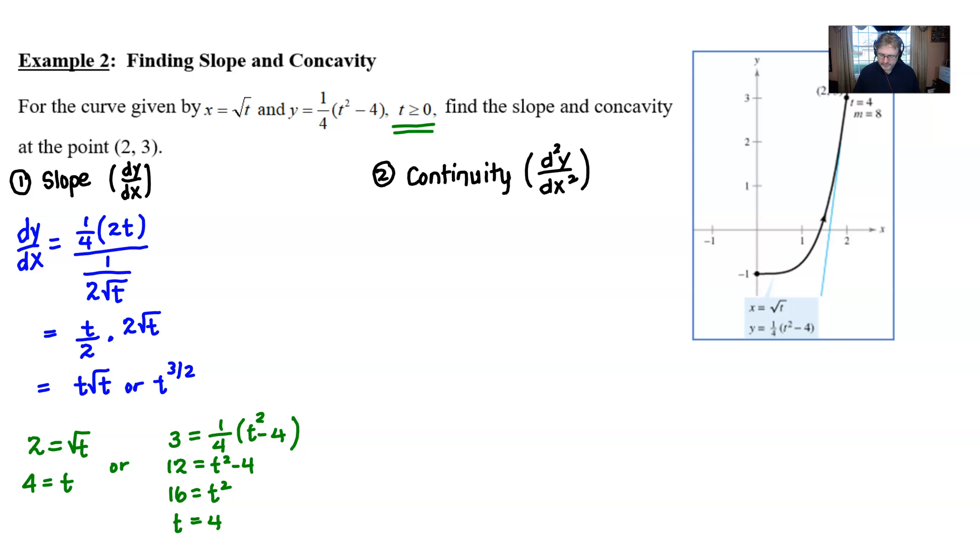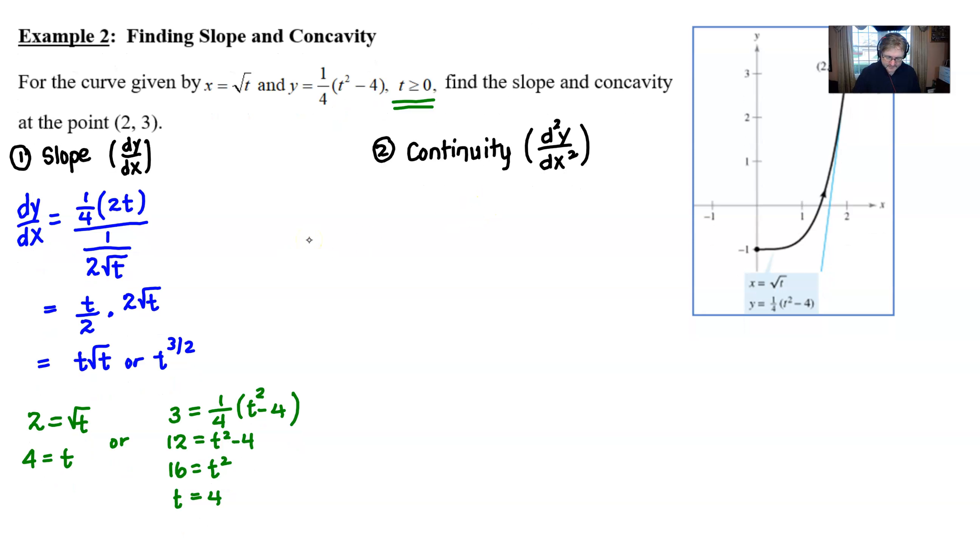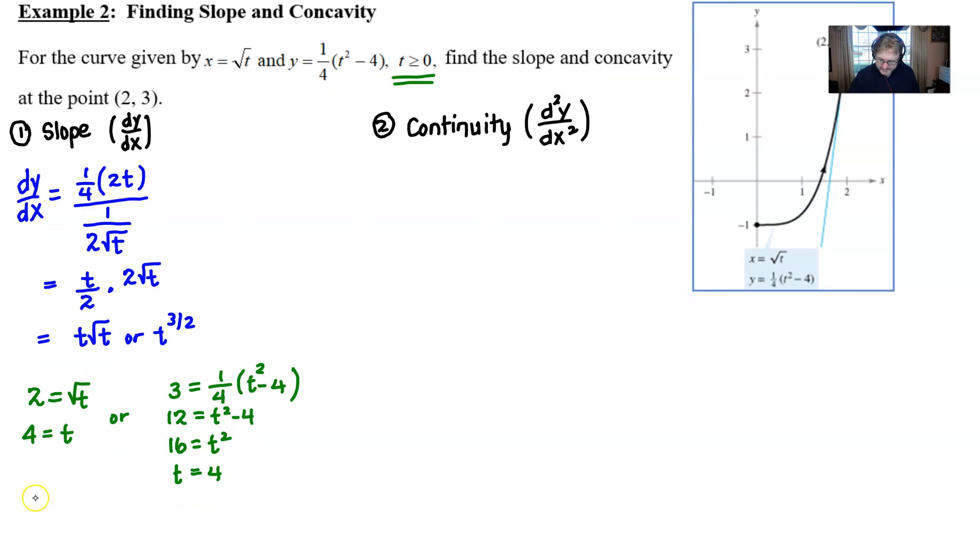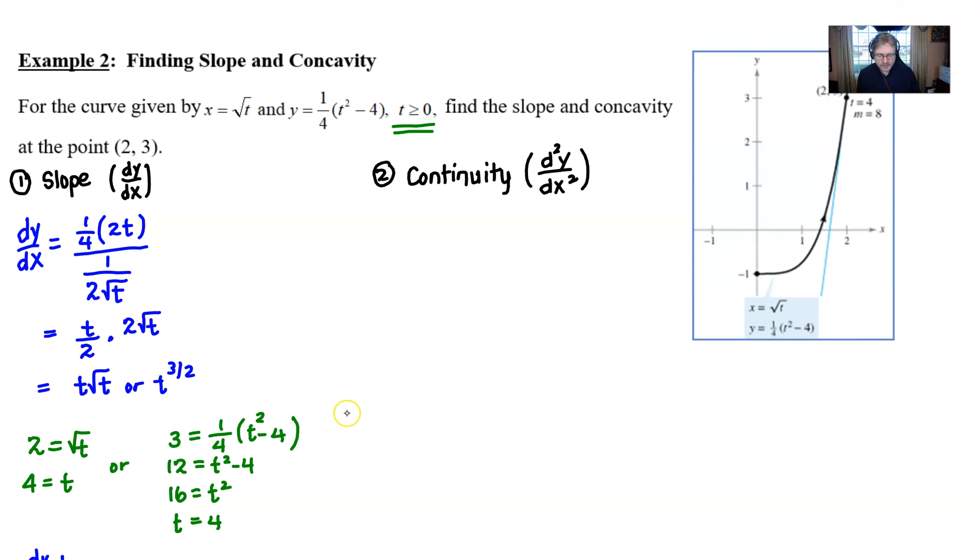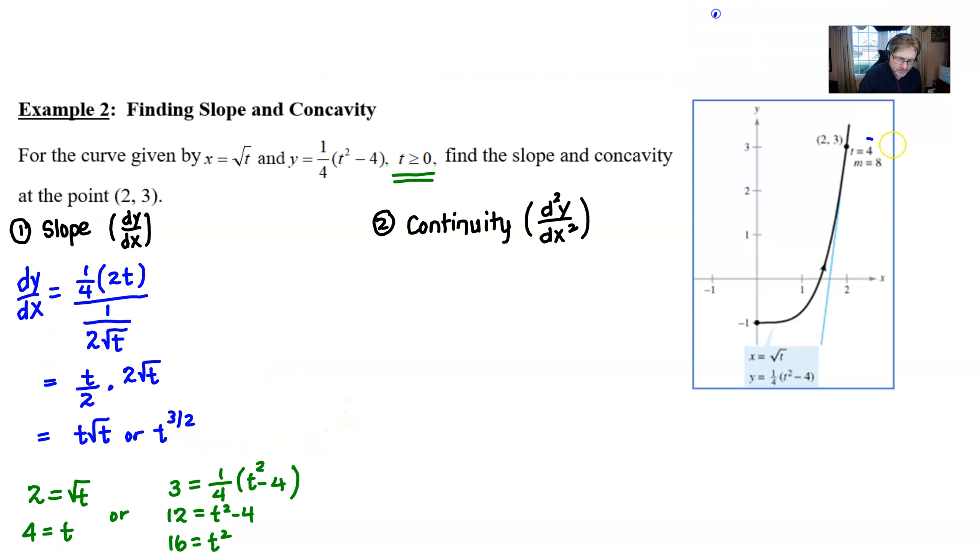So basically, what we're going to do to finish up this problem is to figure out what is the slope or what is the value of dy/dx when t is 4? And we just basically plug 4 into the t square root of t, or now 4 square root of 4. And of course, we get 8. And I think we saw from our picture that the slope is indeed going to be 8 there. This light blue line, very steep slope, definitely steep, is going to have a value of 8.